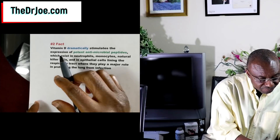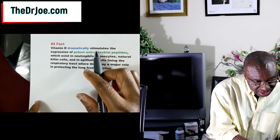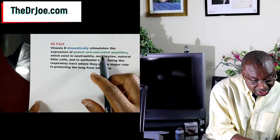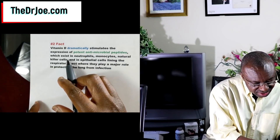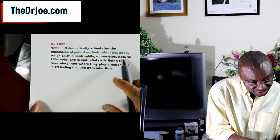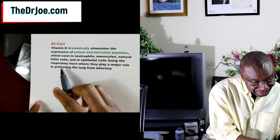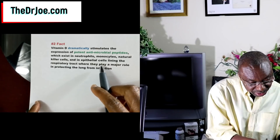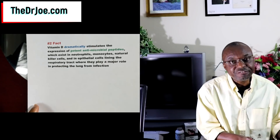Here's another fact: vitamin D dramatically stimulates the expression of potent antimicrobial peptides which exist in neutrophils, monocytes, natural killer cells, and in epithelial cells lining the respiratory tract, where they play a major role in protecting the lung from infection. In plain English, vitamin D is an immune system booster. When you have something that supports and boosts your immune system, it can only be of benefit.